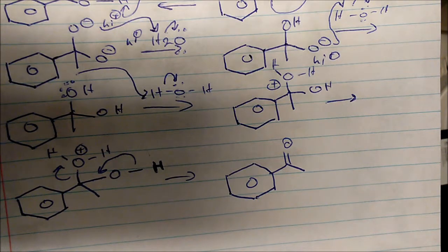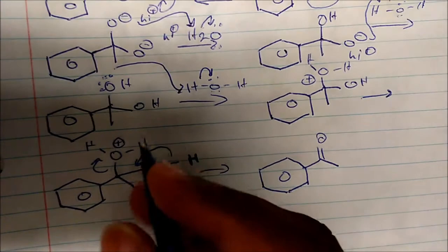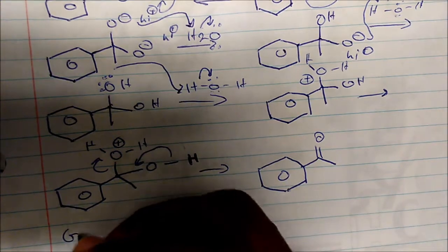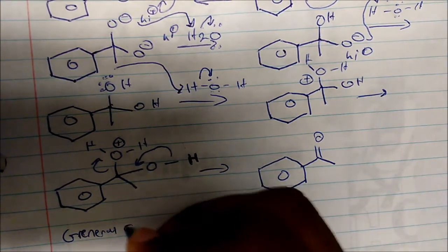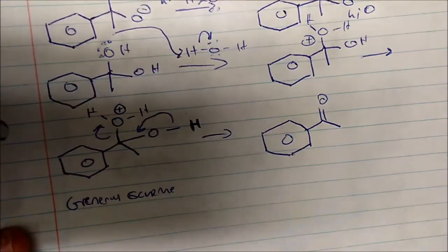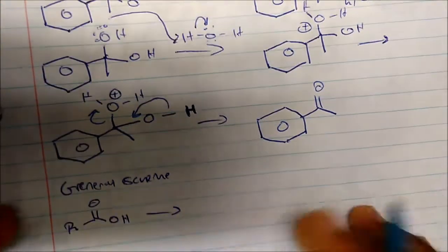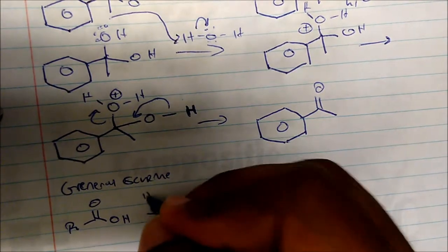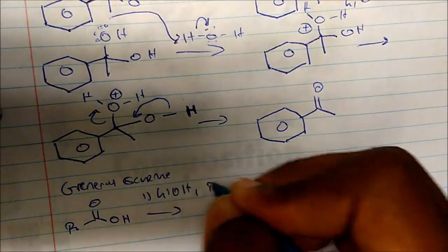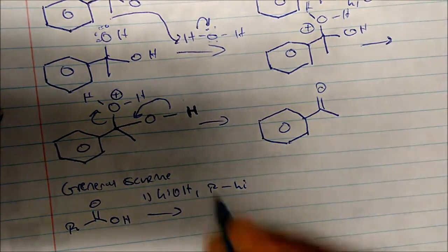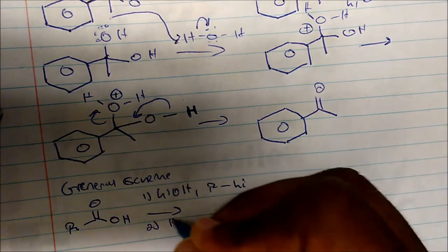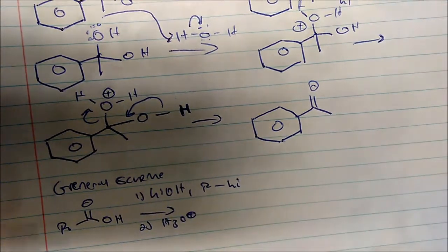So again, this is a general reaction procedure of getting ketones from carboxylic acid using lithium hydroxide and some sort of R lithium as the nucleophile. So the general scheme I want you to take away is that any carboxylic acid, I'm going to add lithium hydroxide and some sort of R lithium, and they do this in acid in the second step.